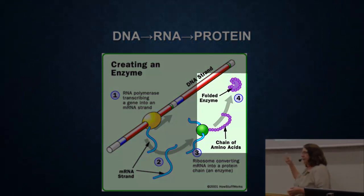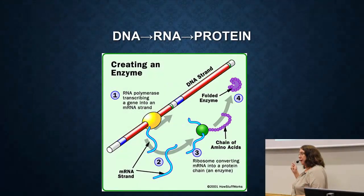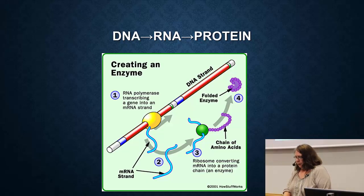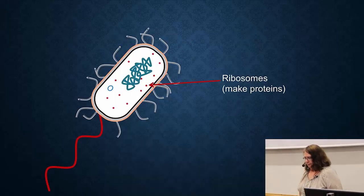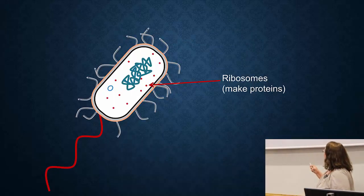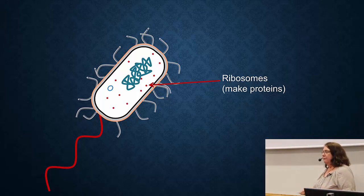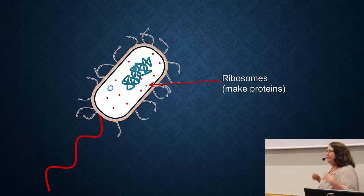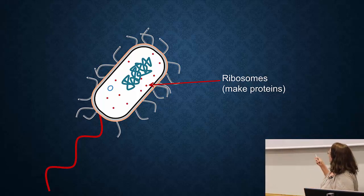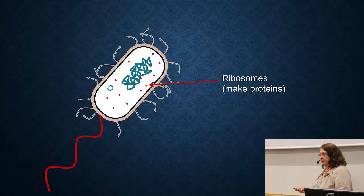I realize that went really fast, but there are other links and we'll go into more detail later. In my picture, all the little dots indicated are ribosomes. Most bacteria have thousands — tens of thousands — of ribosomes in them, so the whole cell is really full of ribosomes, which allow it to make protein.